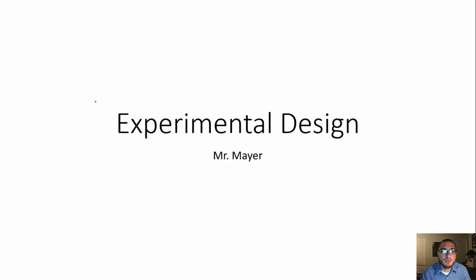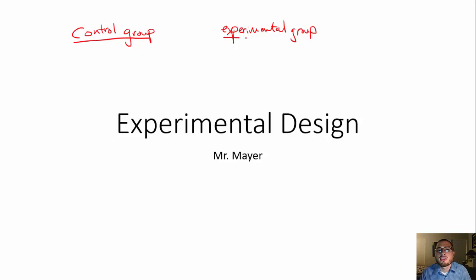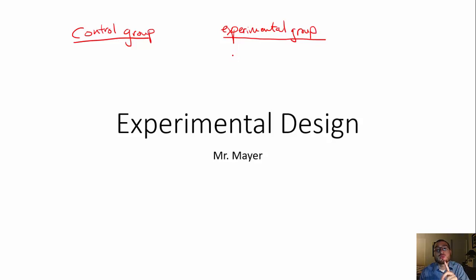Just to start, you want to remember that you have to know the difference between a control group and the experimental group. I always like to think of it with a plant experiment. If I'm going to have a set of plants and I want to know if my new fertilizer is going to help the plants grow, then I'm going to set up an experiment. You only want to change one variable at a time. I can't give all of the fertilizers to one plant because then I won't know which one worked.